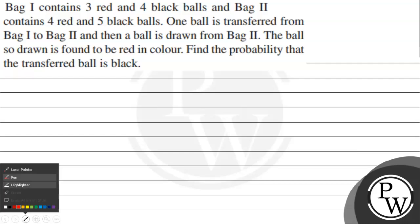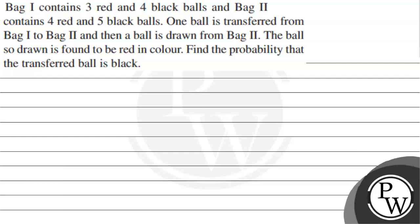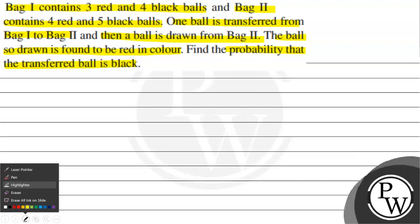Hello, let's read the question. The question says: Bag 1 contains 3 red and 4 black balls, and Bag 2 contains 4 red and 5 black balls. One ball is transferred from Bag 1 to Bag 2, and then a ball is drawn from Bag 2. The ball so drawn is found to be red in colour. Find the probability that the transferred ball is black.